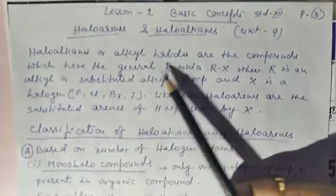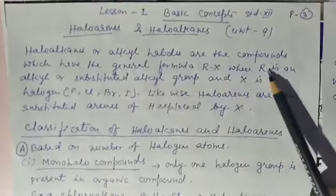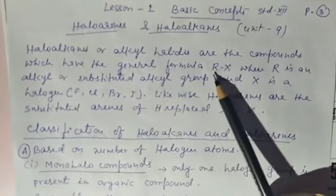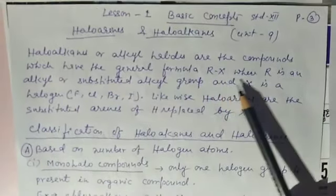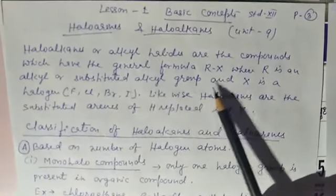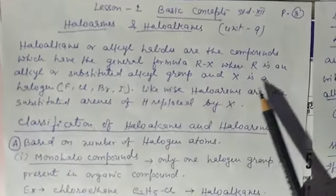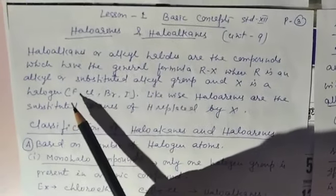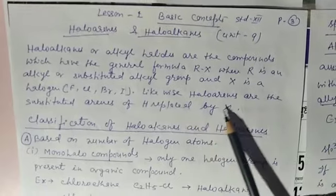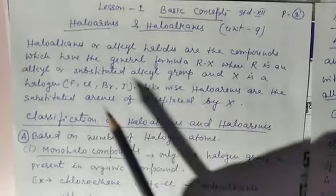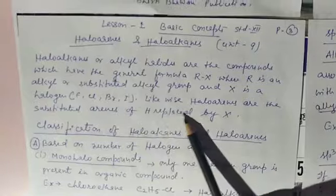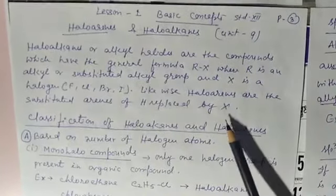Haloalkanes, or alkyl halides, are the compounds which have the general formula RX, where R is an alkyl or substituted alkyl group and X is a halogen, i.e., fluorine, chlorine, bromine, or iodine. Likewise, haloarenes are substituted arenes where H is replaced by a halogen.